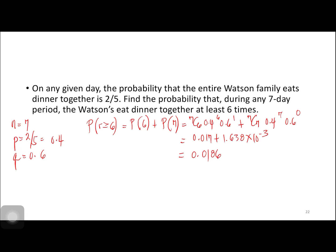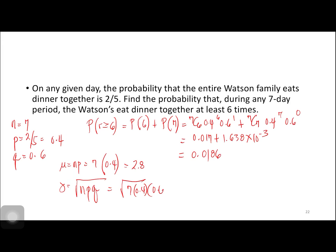Then let us compute for the mean. Mu is equal to np, which is equal to 7 times 0.4, and that is equal to 2.8. Our standard deviation is equal to the square root of npq, which is equal to the square root of 7 times 0.4 times 0.6. That gives us 1.2961.